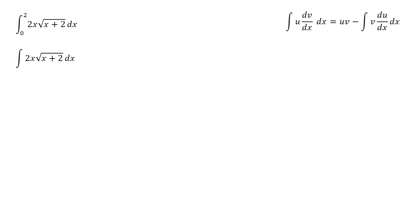So what we're going to do is let our u equal 2x, which means our dv by dx is going to equal the rest of the expression, root x plus 2. If we now differentiate 2x to get du by dx, that's equal to 2. And we're going to integrate dv by dx to find our v. So remember, the square root of x plus 2 is the same as x plus 2 to the power of a half. So to integrate, we're going to raise that power by 1 and divide through by the new power. So we get that v is equal to two thirds x plus 2 to the power of 3 over 2.